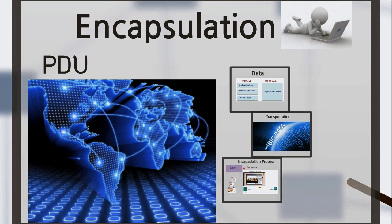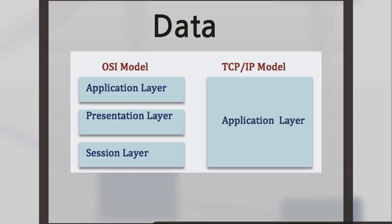Now we're going to talk about encapsulation. The form that a piece of data takes at any layer is called a Protocol Data Unit (PDU). During encapsulation, each layer encapsulates the PDU that it receives from the layer above. In the first three layers — the application, presentation, and session layers of the OSI model, or the application layer of the TCP/IP model — the information is considered and known as data.